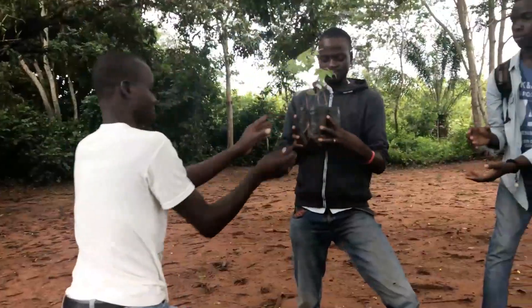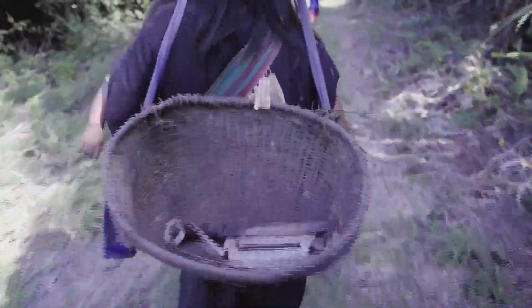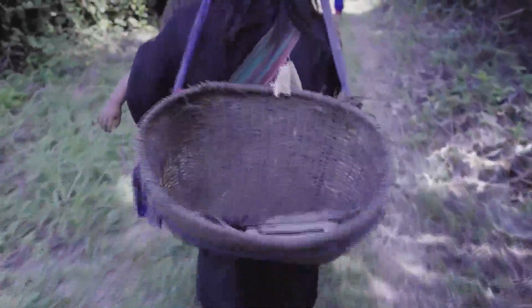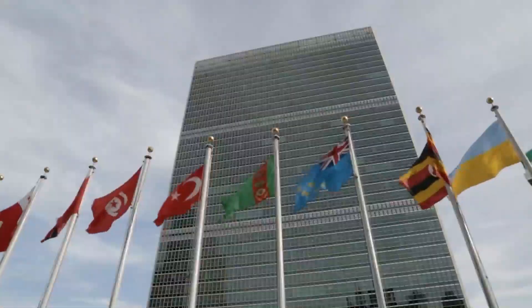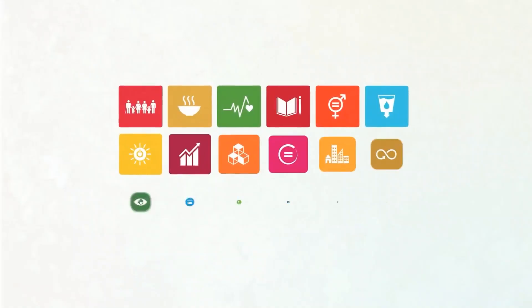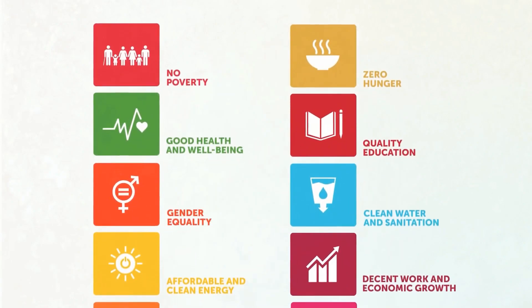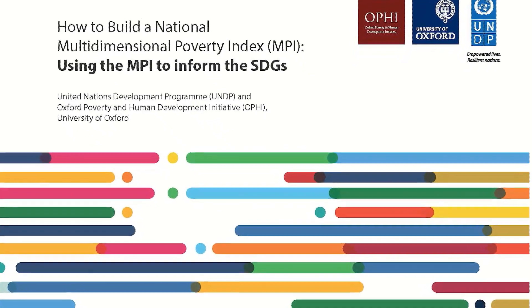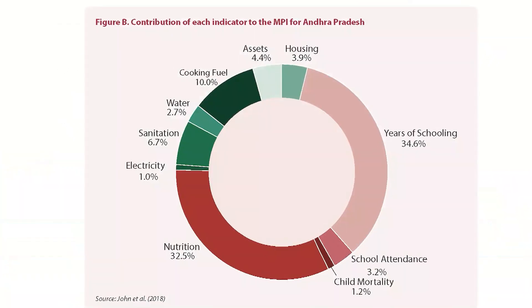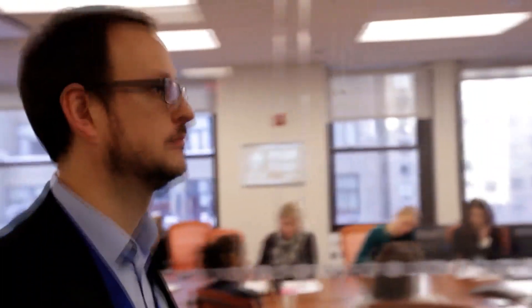To spark real change, we must gain a holistic understanding of the lives of people affected by poverty. What are their daily struggles that are invisible to income-based poverty measures? The 2030 Agenda for Sustainable Development invites countries to develop and use poverty metrics beyond income. UNDP and the Oxford Poverty and Human Development Initiative are offering a multidimensional approach to measure poverty.